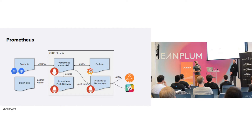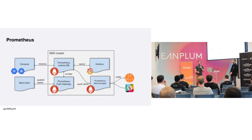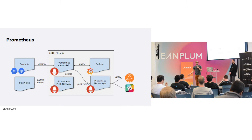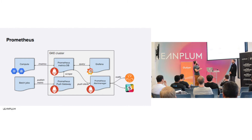Down here is the Prometheus push gateway, which is needed for batch jobs that are ephemeral and don't live on certain instances — they just come up and die and you can't expose an endpoint for them. Maybe after some upload job completes you just want to increment a counter or see how many successful inserts there were versus failures, but then the whole service goes down. So you publish the metrics to the push gateway and Prometheus scrapes them from there.